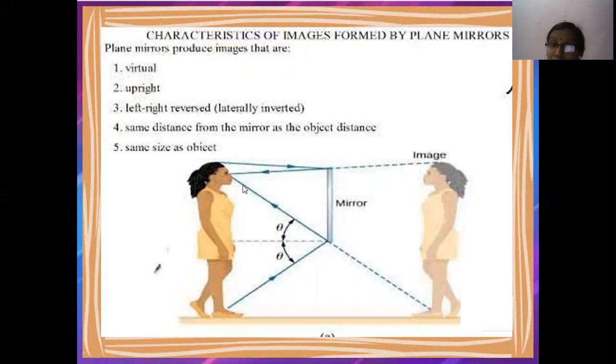Next, the same size as the object. As you have seen in the shadow, the size of the object is changing. But here, in the case of plane mirror, in the formation of image, the size will remain the same. Size is as it is the object size.